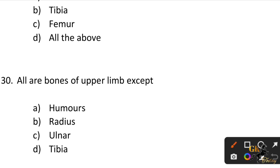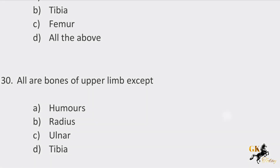Final question: All bones of the upper limb except — the answer is Option D: Tibia. All bones of the upper limb except Tibia. Thank you.